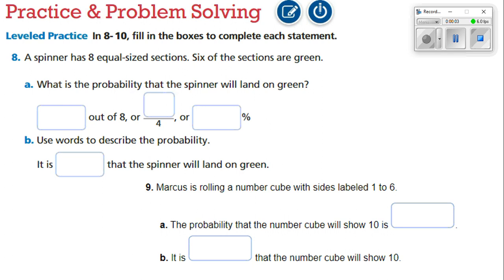All right, good evening everybody. Today we're going to be doing the homework lesson for 7-1, likelihood and probability. We're going to start with practice and problem solving, number eight. A spinner has eight equal size sections. Six of the sections are green. What is the probability that the spinner will land on green?